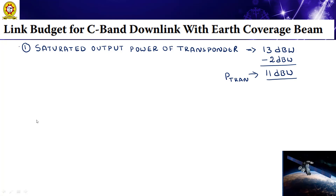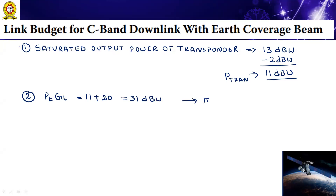Next step: on-axis EIRP of the transponder. Using the empirical formula EIRP = Pt + Gt, where Pt = 11dBW and Gt = 20dB, we get EIRP = 31dBW. This is observation number two, and the transponder power is observation number one.